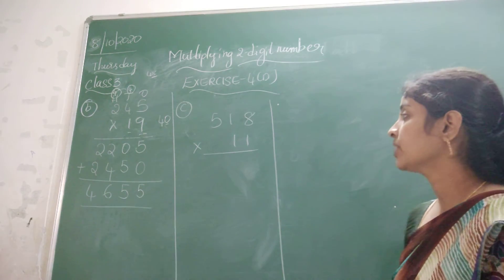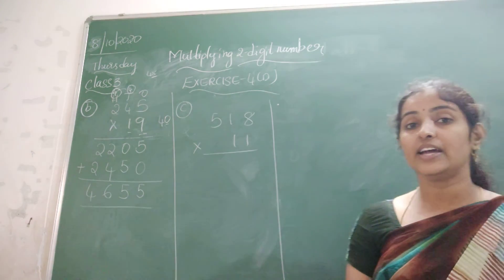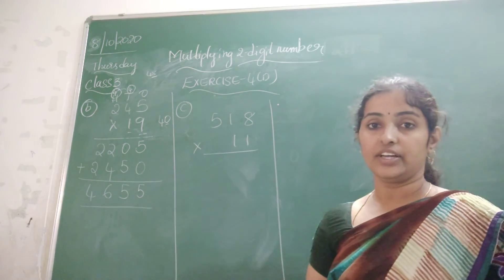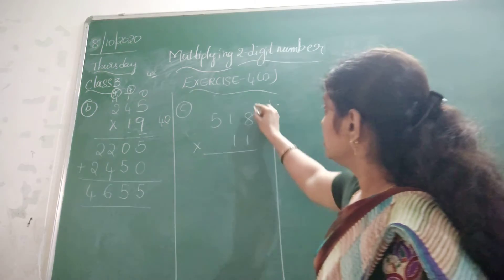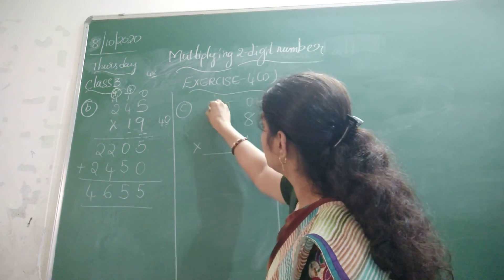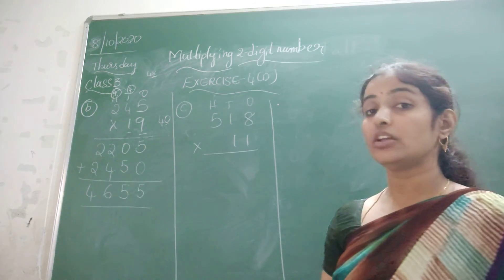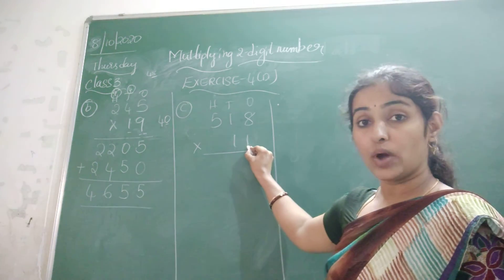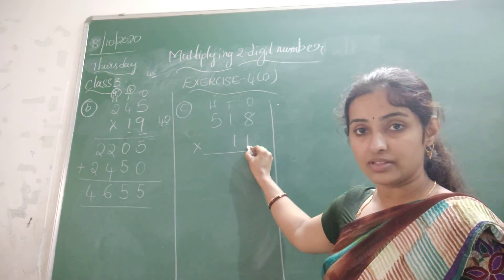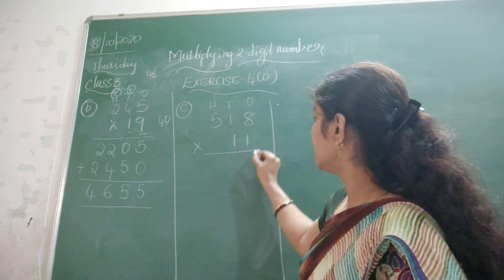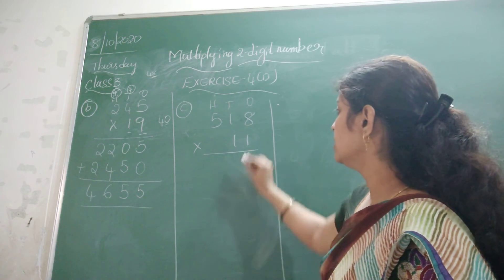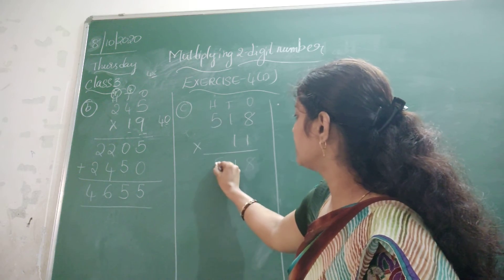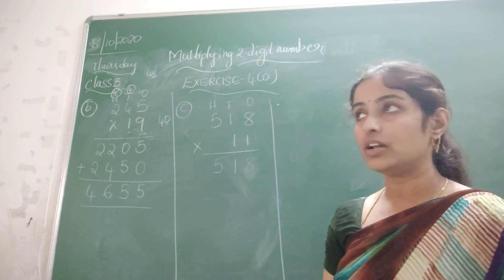Now look at the next problem: 580 multiplied with 11. This is in 1's, 10's, and 100's. Now start multiplying. First with the 1's place number: 1 × 8 is 8. Then 1 × 1 is 1. Then 1 × 5 is 5.